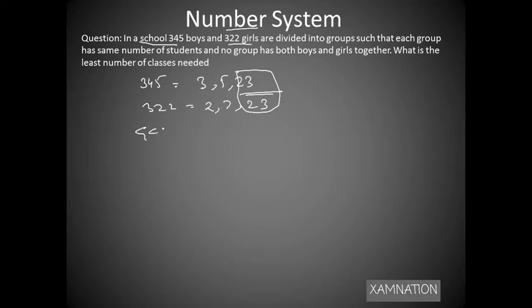So GCD of 345 and 322 is 23. So we need to make classes from 23. 23 is the number of students per class.